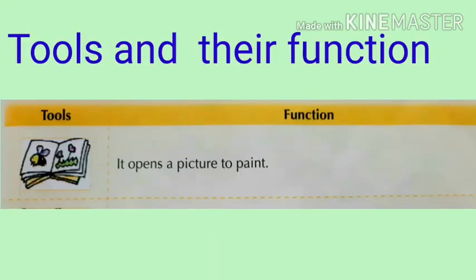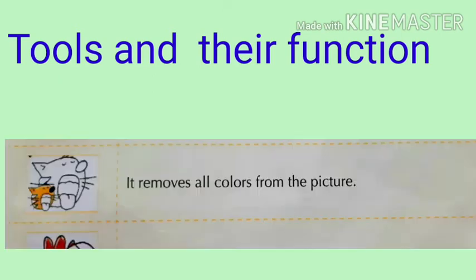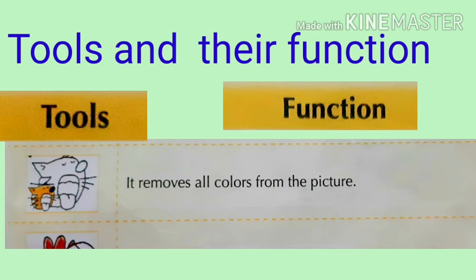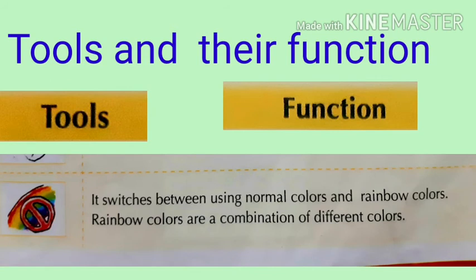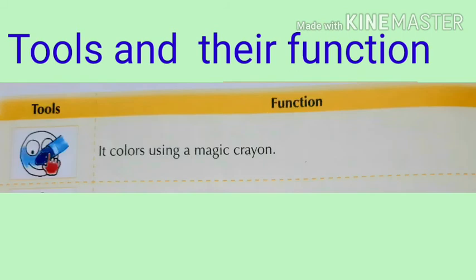Tools and Their Functions: This tool opens a picture to paint. This tool removes all colors from the picture. This tool is called the undo button — it undoes the last three attempts. This tool switches between using normal colors and rainbow colors. Rainbow colors are a combination of different colors. This tool colors using a magic crayon.